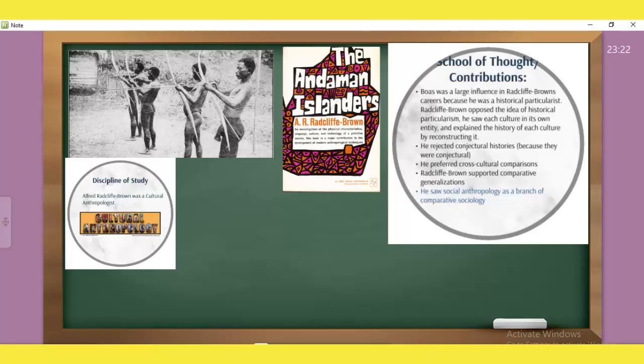Andaman Islanders and West Australia tribe's participant observation study. He used to study social anthropology. But he used to say that this is the main thing, used to study as it is in comparative sociology. He used to see what common factors are in society. Alfred Redcliffe Brown was a cultural anthropologist who compared one society to another society.